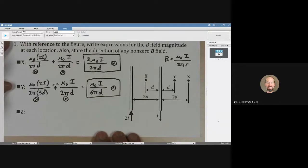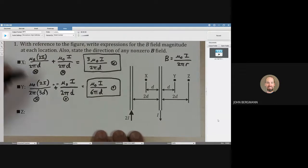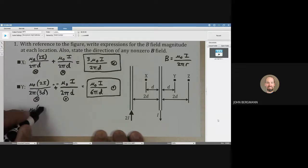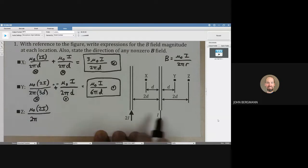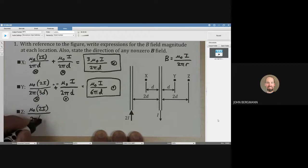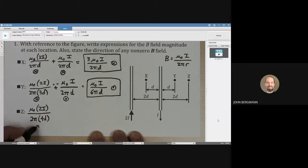How about at point z? Same thing, μ₀. Let's take the 2i current first: μ₀ times the current divided by 2π. How far away are we from point z? That looks to me like we are 4d away. And in what direction is that? It is directed into the page.